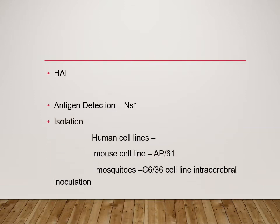Virus isolation is also possible using cell lines — human cell lines, mouse cell line AP61, and mosquito cell line C636. You can inoculate the sample into these cell lines to isolate the virus, or inoculate directly into mosquitoes intracerebrally. Molecular techniques are also available.